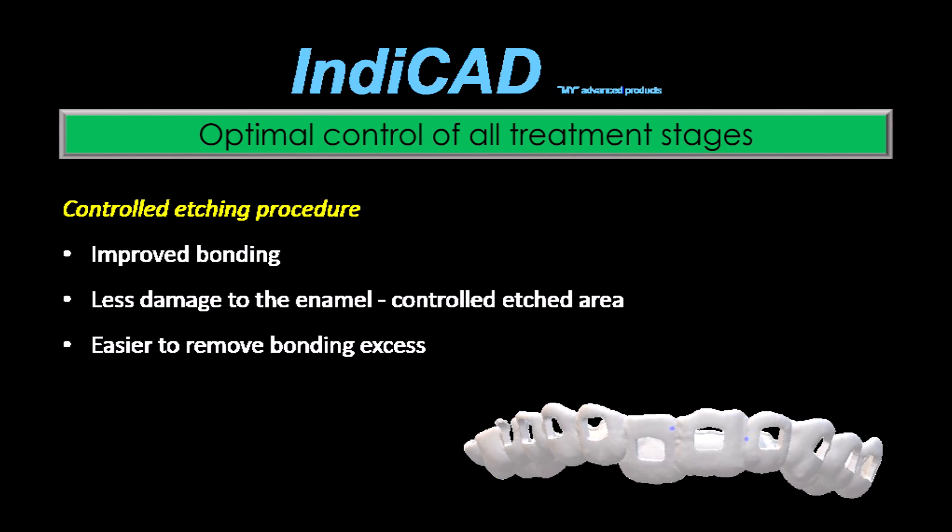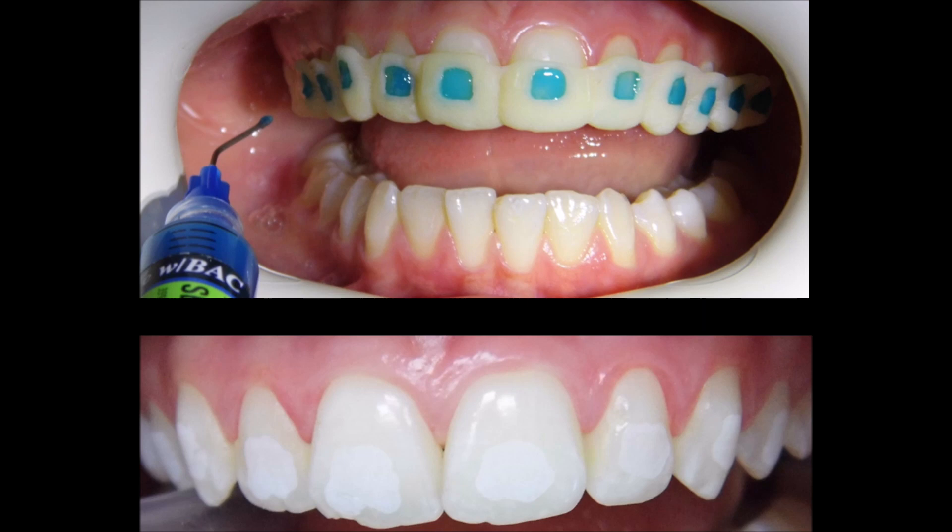One interesting feature is the etching tray. The use of existing dry ring bonding trays does not allow removal of the bonding agent before curing, so control of the etching procedure is important — it improves bonding, causes less damage to the enamel due to control of the etching area, and makes it easier to remove bonding excess. The 3D-printed etching tray is placed on the teeth, etching material is applied through small windows, removed by suction after 20 seconds, and then the tray is removed and the teeth are rinsed and dried.